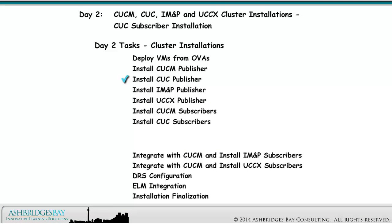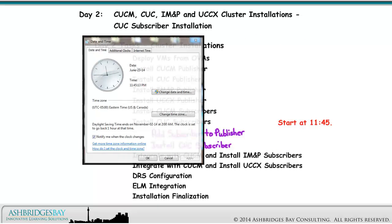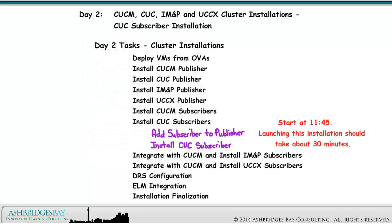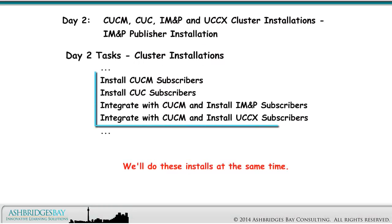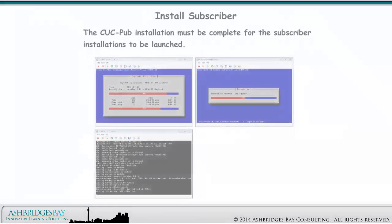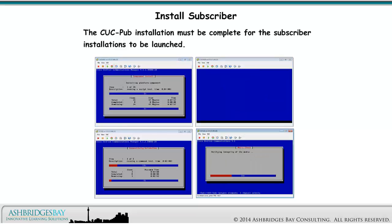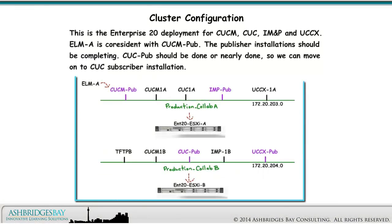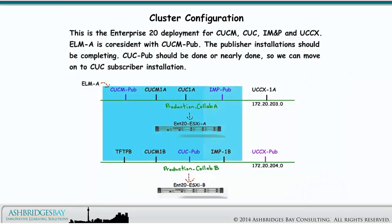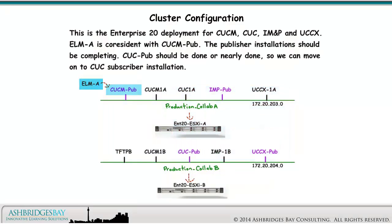The CUCPUB installation should have completed by now. Since we've deployed the CUC VMs from OVAs and attached the installation media, we can proceed to add the subscriber to the publisher and install the CUC subscriber. We started this installation at 11:45. Launching this installation should take about 30 minutes. This is the Enterprise 20 deployment for CUCM, CUC, IM&P, and UCCX. ELMA is co-resident with CUCMPUB. CUCPUB should be done or nearly done, so we can move on to the CUC subscriber installation.